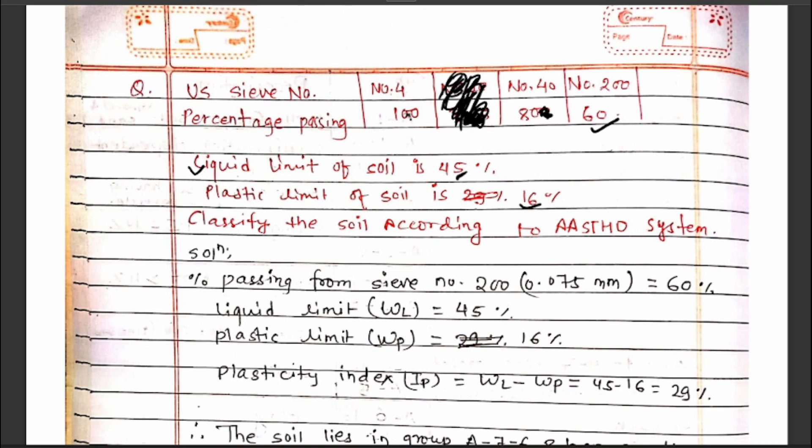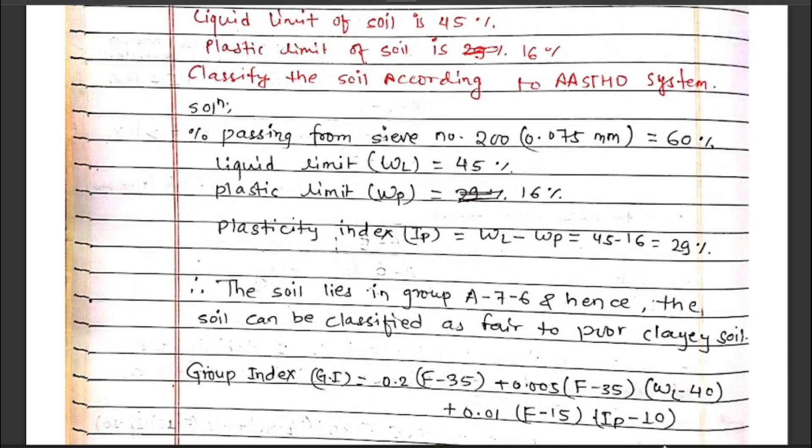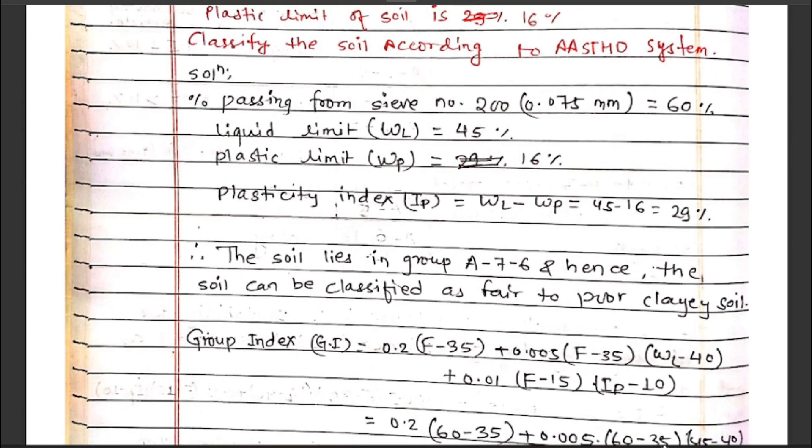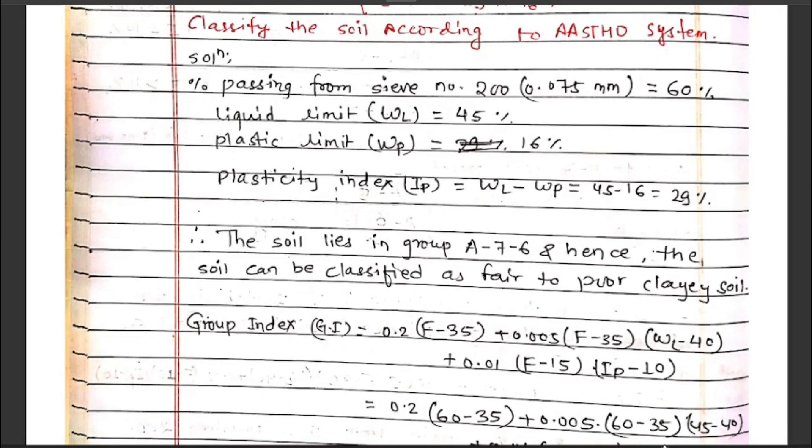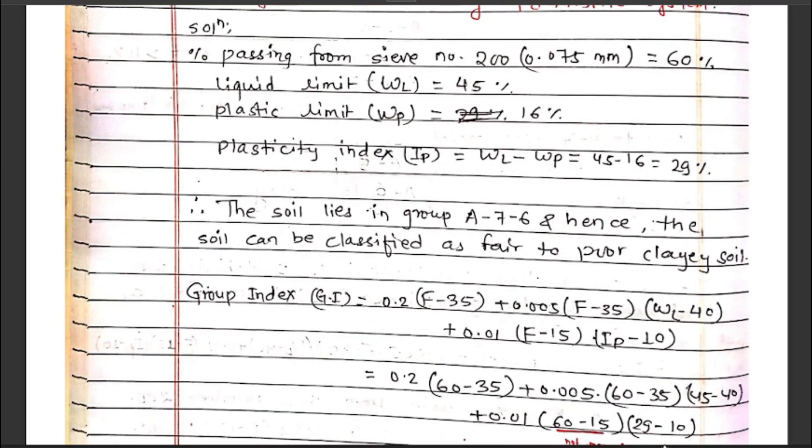Let's classify this soil according to the AASHTO method. The given data: percentage passing from sieve number 2 is 60%, liquid limit is 45%, and plastic limit is provided.